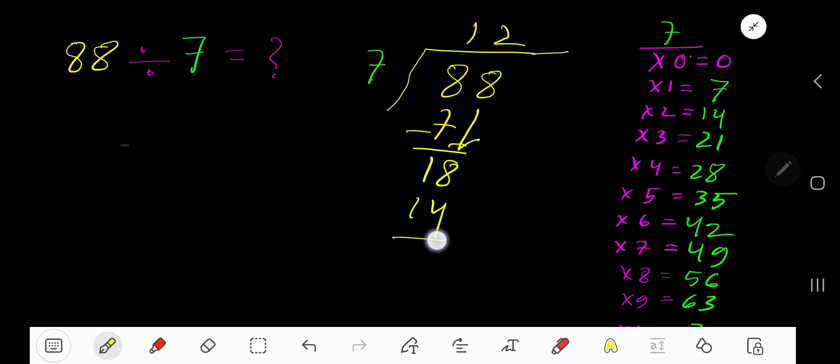So our answer is 12 remainder 4. If you want to write your answer in decimal form, then add zeros and bring down a zero.